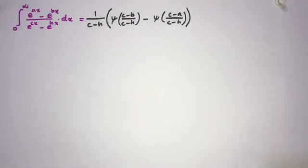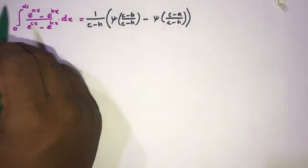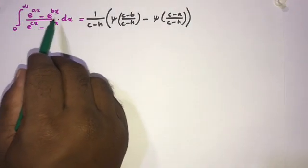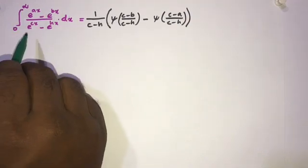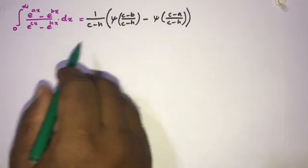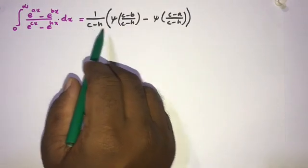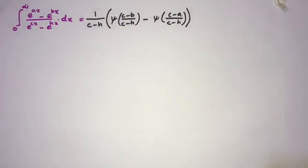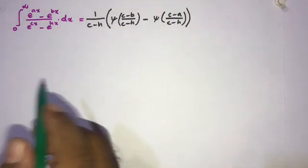Welcome to the mathematics channel. Today we are going to solve another interesting integral: the integral from 0 to infinity of (e^(ax) - e^(bx)) / (e^(cx) - e^(hx)) dx, which equals 1/(c-h) times [ψ((c-b)/(c-h)) - ψ((c-a)/(c-h))]. I got this question from a research paper.